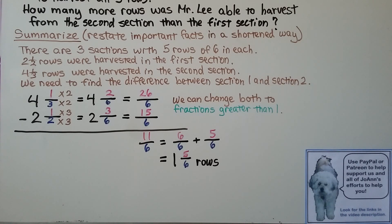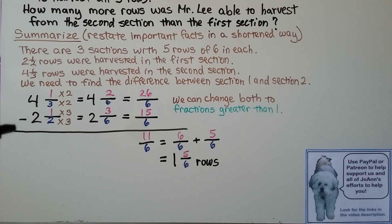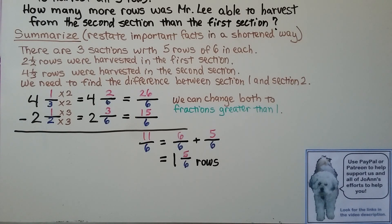We have 1 and 5 sixths rows — that's how many more rows Mr. Lee was able to harvest from the second section than the first section. Remember, as you're finding the difference between mixed numbers, the first thing you do is give them a common denominator, because you may not have to use renaming. Once you give them a common denominator, you may just be able to subtract those numerators.